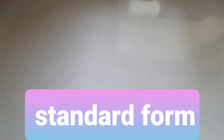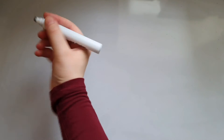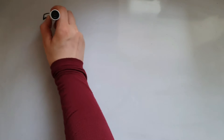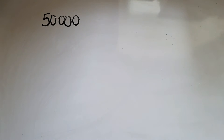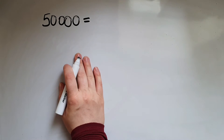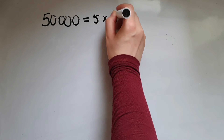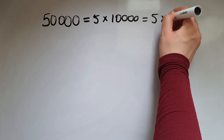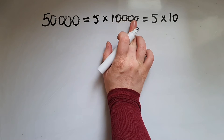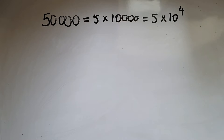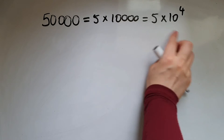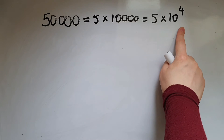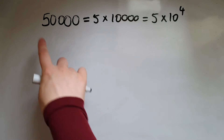In this video we'll learn about standard form. Standard form is used when working with very large or very small numbers, and it helps us with calculations. For example, 50,000 can be written as 5 times 10,000, which is the same as 5 times 10 to the power of 4. This is standard form — a short form of writing numbers. The ordinary form is the common way of writing numbers.